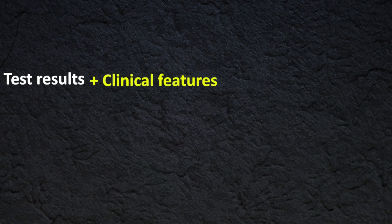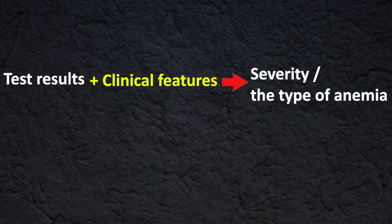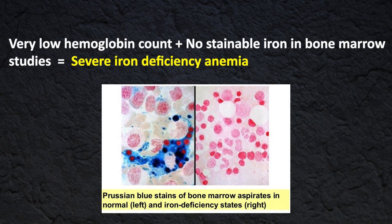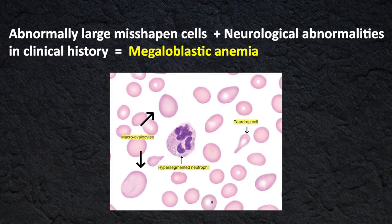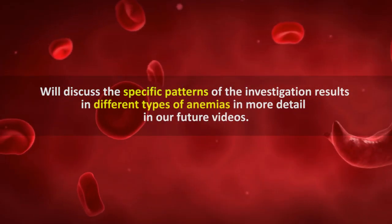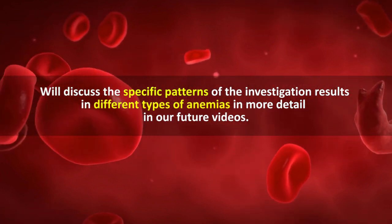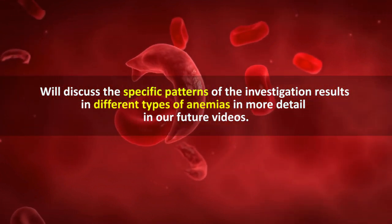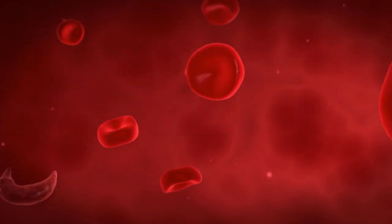These tests together with clinical features help us assess the severity and type of anemia. If a patient has a very low hemoglobin count with no sustainable iron in bone marrow studies, the results point towards severe iron deficiency anemia. On the other hand, if a patient shows abnormal large misshapen cells in a peripheral blood smear with features of neurological abnormalities in clinical history, we can think of megaloblastic anemia. We will discuss these specific investigation patterns in more detail in future videos.